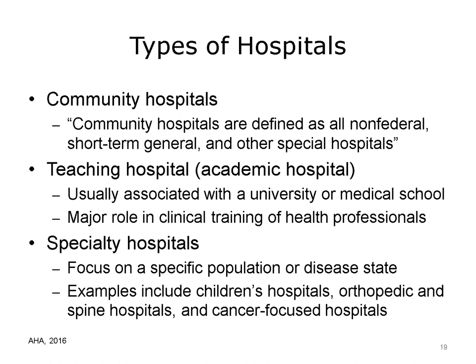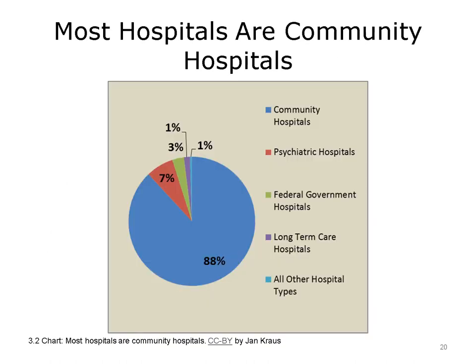Teaching hospitals are usually associated with a university or medical school. Also termed academic hospitals, they have a major role in training health professionals. The range of clinical care provided by community and teaching hospitals may be the same. There are also hospitals that focus solely on a specific population or disease state, which may be part of a larger integrated delivery network or operate as an independent for-profit or non-profit organization. Most U.S. hospitals are privately funded community hospitals that offer acute care and are not affiliated with the federal, state, or local governments. The United States also has a substantial number of psychiatric hospitals and hospitals funded by the federal government.